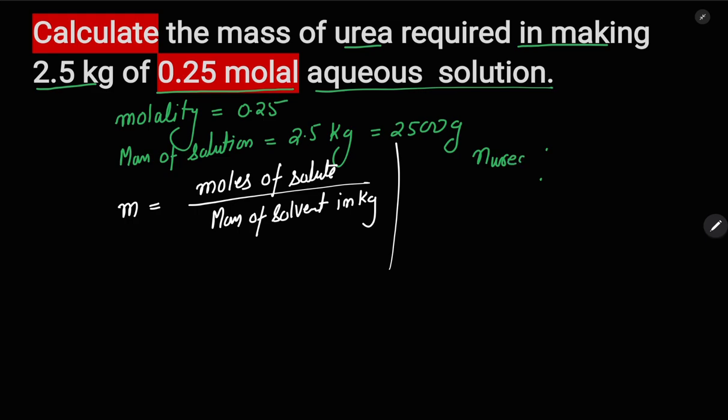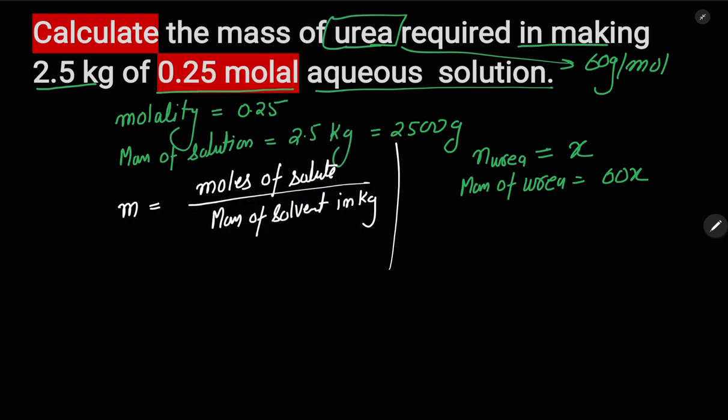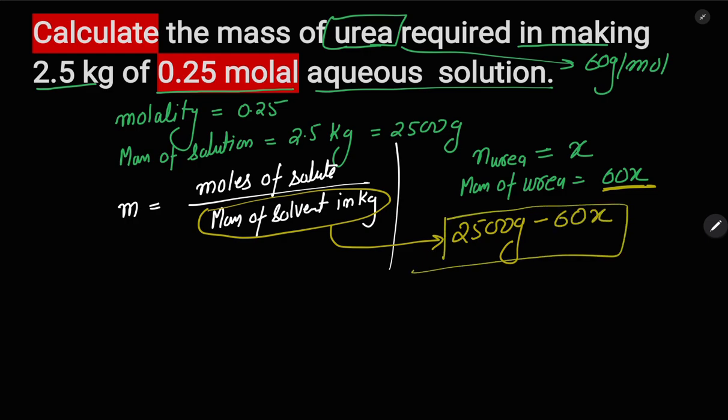Mass of urea will be 60x because urea's molecular mass is 60 grams per mole. The mass of solvent will be mass of solution which is 2500 grams minus mass of the solute urea which is 60x.